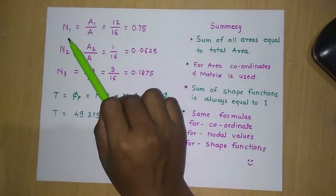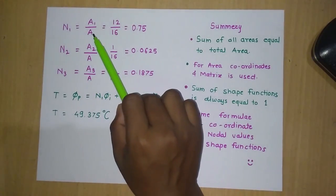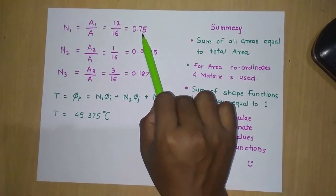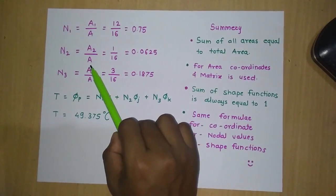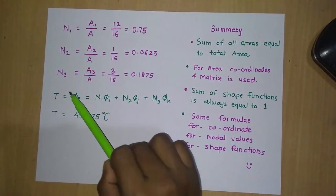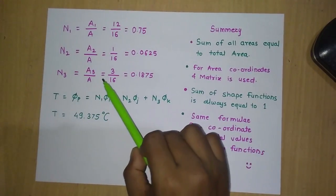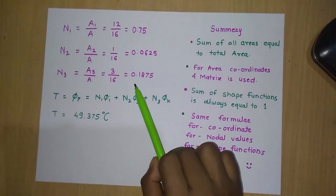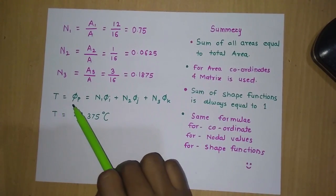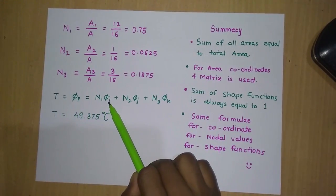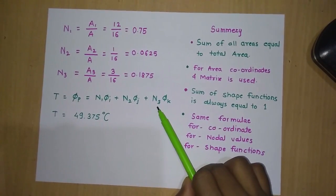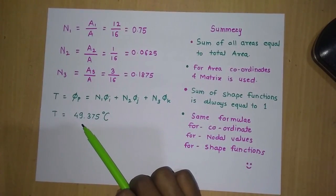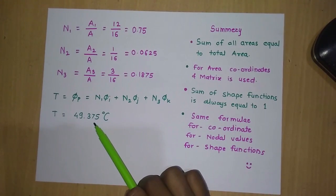Now we calculate the shape functions: N1 = A1/A = 12/16 = 0.75 (dimensionless). Similarly, N2 = A2/A = 1/16 = 0.0625, and N3 = A3/A = 3/16 = 0.1875. Putting these values into our equation: φp = N1·φi + N2·φj + N3·φk, we calculate the temperature at point P.